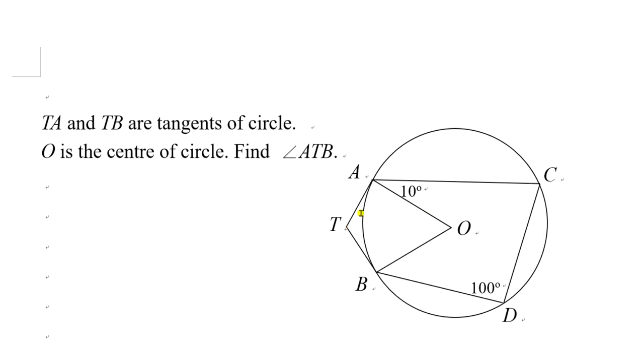Okay, TA and TB are tangents of circle, O is the center of circle, find angle ATB.